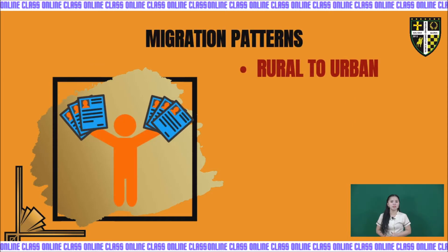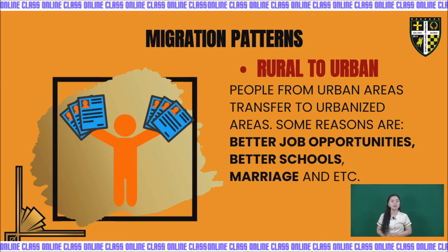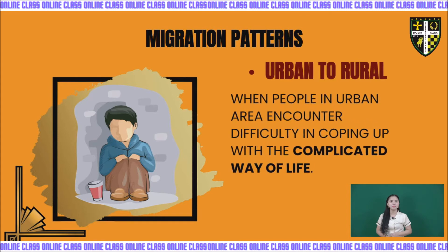Rural to urban migration happens when people from rural areas transfer to urban areas. Some reasons are better job opportunities, better schools, marriage, etc. Employment also forces people from urban areas to transfer to rural areas since many companies have already been established in those places. Urban to rural migration happens when people in urban areas encounter difficulty coping with the complicated way of life and decide to transfer to rural areas where they think life is simpler, more peaceful, and the air is free from pollution.